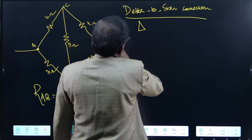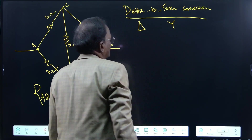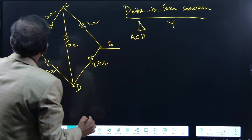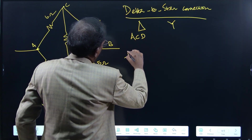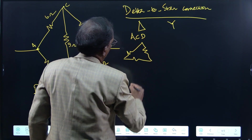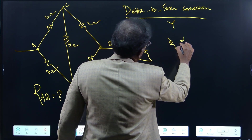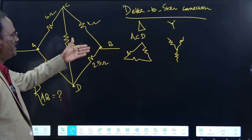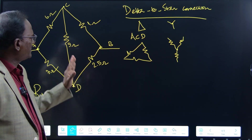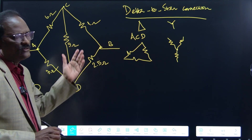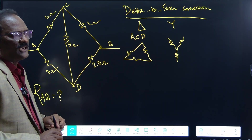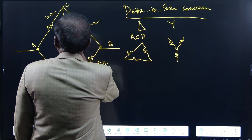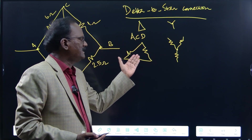Delta shape is a triangle and star means a Y-connection. In our circuit, ACD forms one delta and CDB forms another delta. To simplify the problem, we can convert either delta into an equivalent star (Y) connection. Let me take the ACD delta and convert it into an equivalent star network.